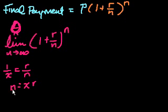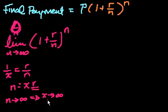And if n is equal to xr, what's n approaching infinity is the same thing, assuming that r is constant, right? That's the same thing as x approaching infinity. Or we could view it the same way, the other way around. x approaching infinity is the same thing as n approaching infinity.